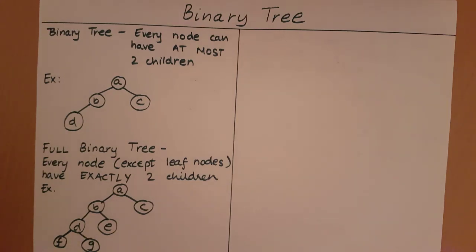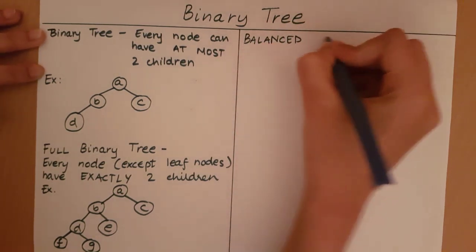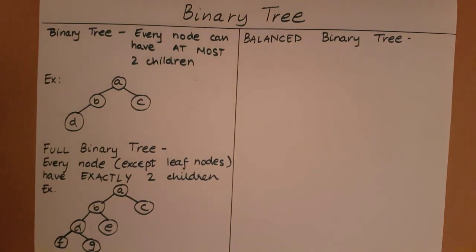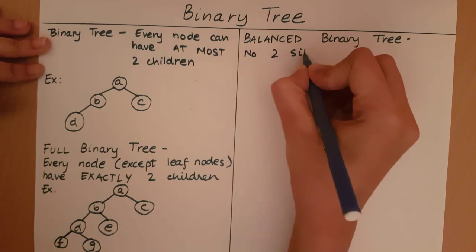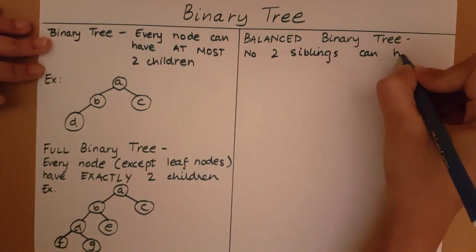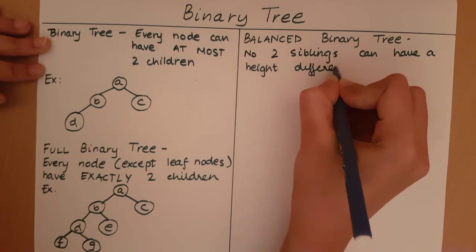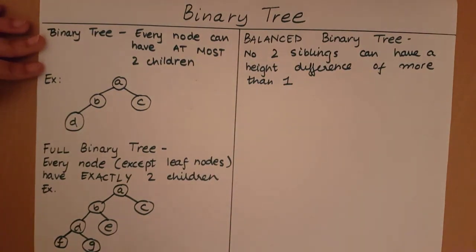For a binary tree to be balanced, no two siblings can have a height difference of more than one. Let's see what this means using an example.